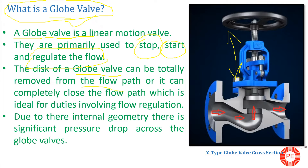The disc of a globe valve can be totally removed from the flow path — you can see this is the disc and these arrows are showing the flow path. The disc can be removed completely from the flow path, which is ideal for on/off situations. This disc can also be stopped intermediately, which is used when throttling of flow is required.